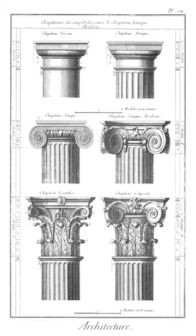Sommier (or summer beam): girder or main beam of a floor; if supported on two-story posts and open below, also called a breast or breast summer. Often found at the centerline of the house to support one end of a joist and to bear the weight of the structure above.